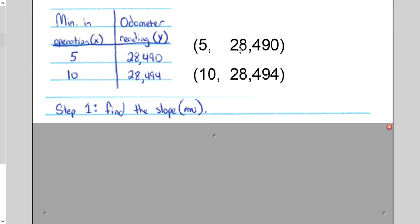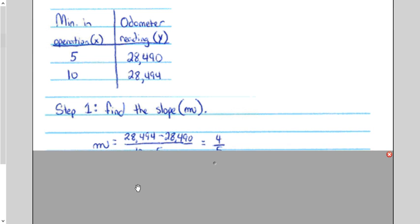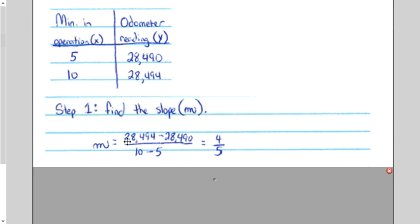Step one, find the slope. So let's just call this one 0.1. This second set will be 0.2. And let's just get used to reading it from the table. This would be your Y2. This would be your Y1. This would be your X2. This would be your X1. And so when you plug them into the slope formula, Y2 minus Y1 over X2 minus X1, we find out very quickly that our slope is 4 fifths, or 4 over 5.